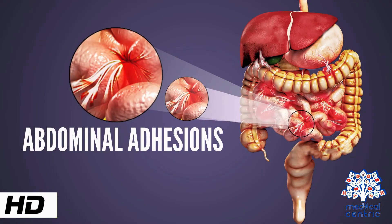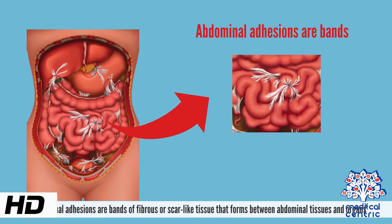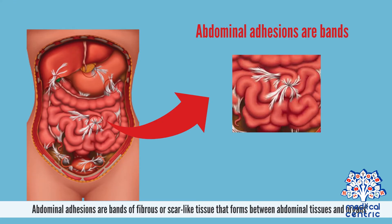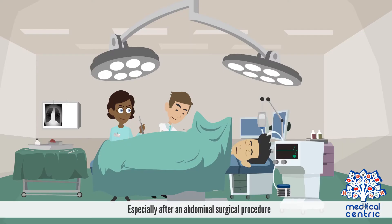Today's topic is Abdominal Adhesions. Abdominal adhesions are bands of fibrous or scar-like tissue that forms between abdominal tissues and organs, especially after an abdominal surgical procedure.